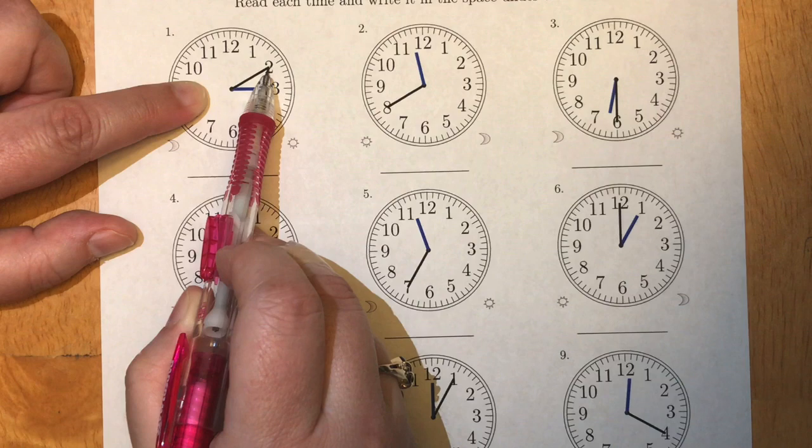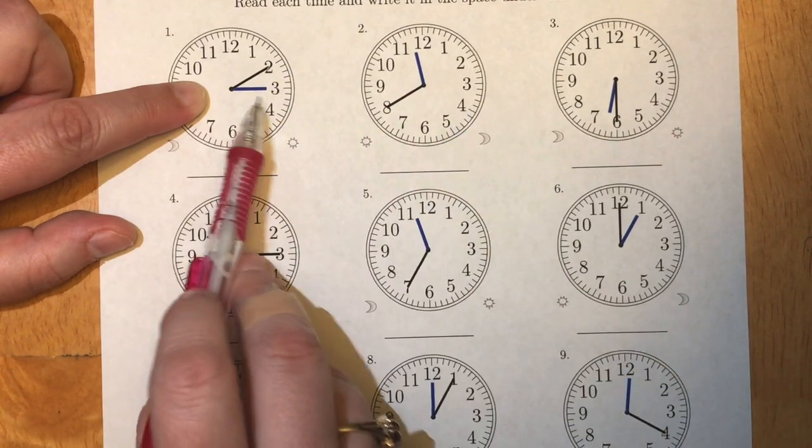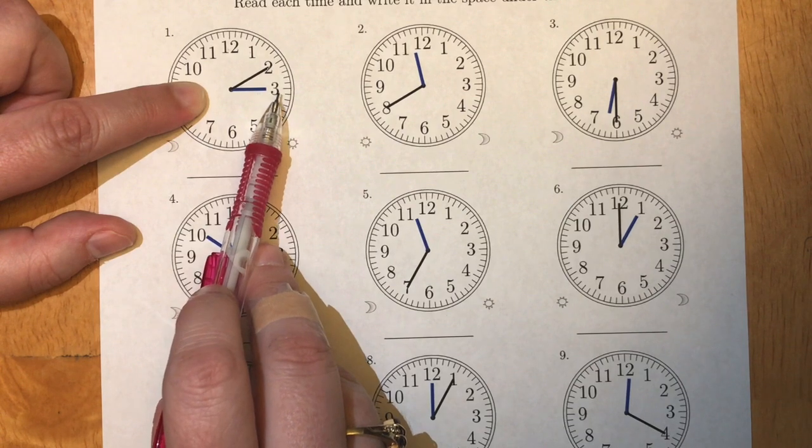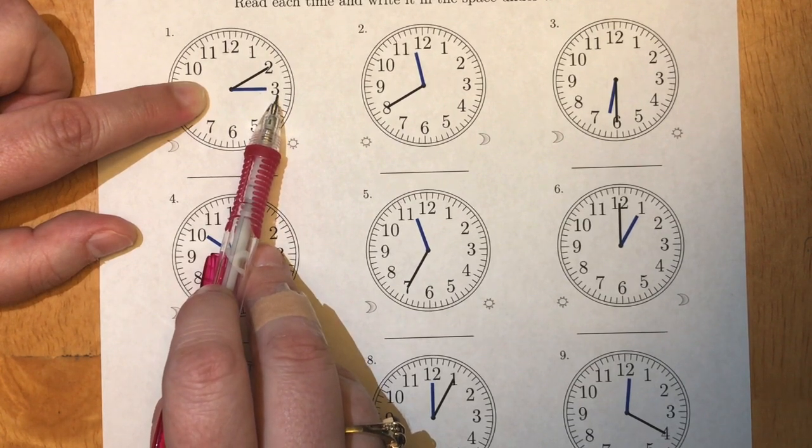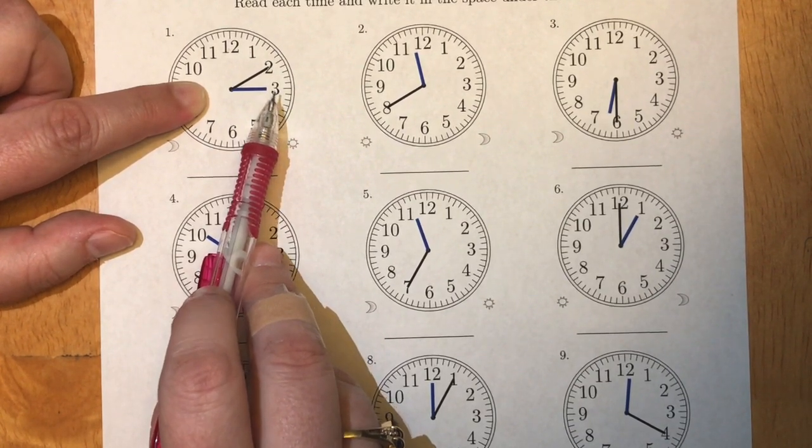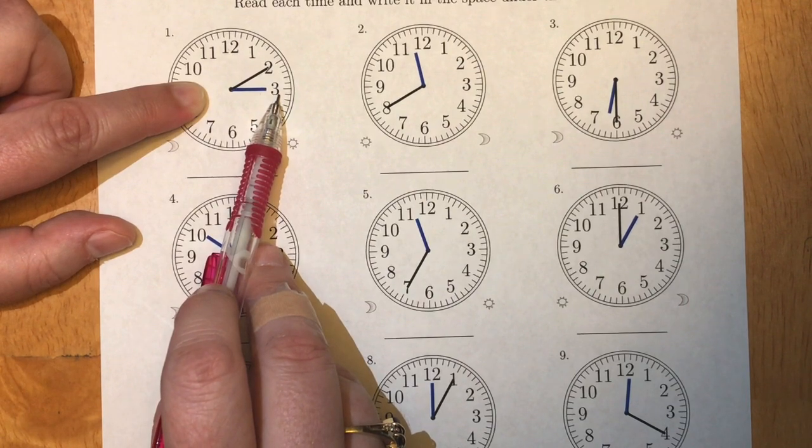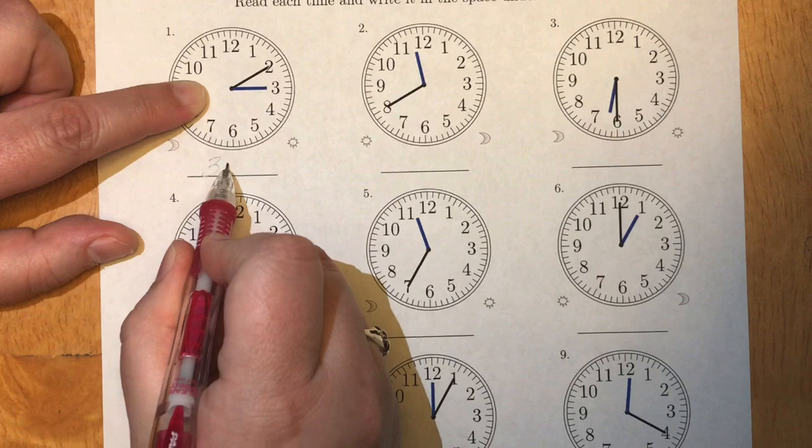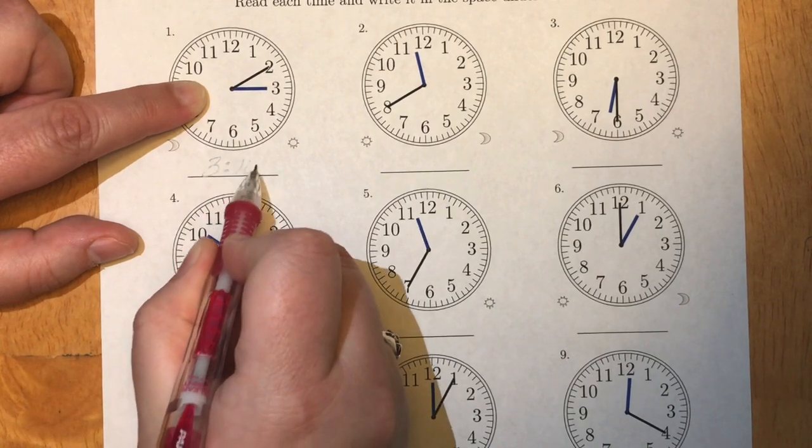Now what hour are we looking at? Well if we go back to our hour hand you'll notice that it's pointing right at the three. So right now it's gonna be three o'clock plus those extra ten minutes means the current time is three ten.